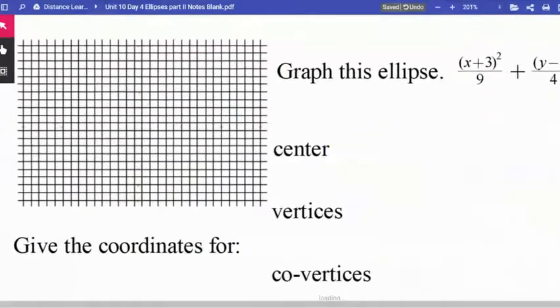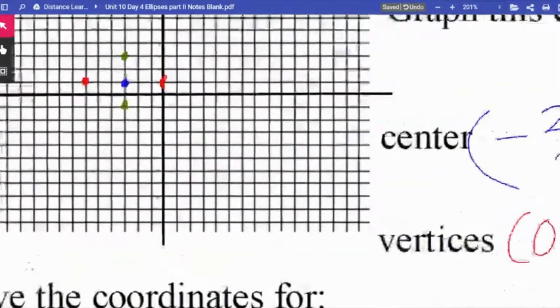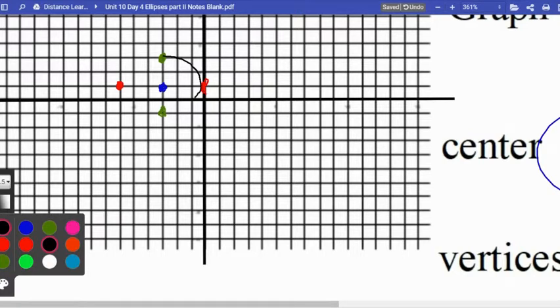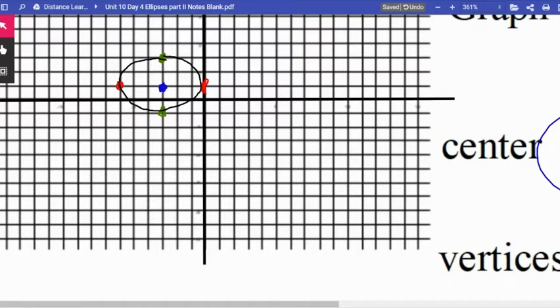That's enough information here to actually sketch my graph. Try to do your best to make sure that the graphs round out at the points. That's the trick to making them look nice. Don't attack the point straight on because then it'll look like it has sharp corners and we don't want that.